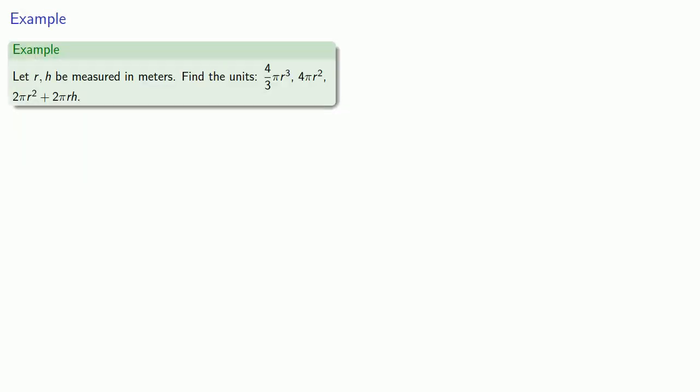For example, let r and h be lengths measured in meters. Let's find the units for the expressions: 4 thirds pi r cubed, 4 pi r squared, 2 pi r squared plus 2 pi r h. So the first important idea is that pure numbers don't alter units. So in this expression, 4 thirds pi r cubed, the 4 thirds and the pi are pure numbers, and they don't have any units. So this expression has the same units as r cubed. And now we can find the units. If r is in meters, then r cubed is in meters cubed, and so is the expression 4 pi r cubed.